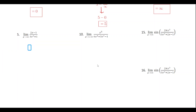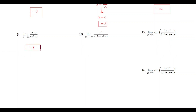For number five, we just have a regular rational function where the degree on the bottom is bigger, so the denominator is growing faster. Anytime that happens, we have a horizontal asymptote of y equals zero, so that's what the limit equals.